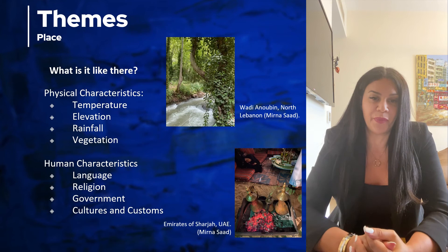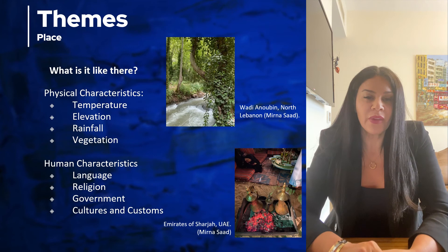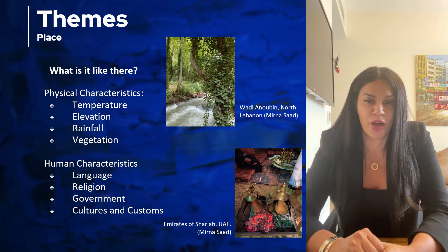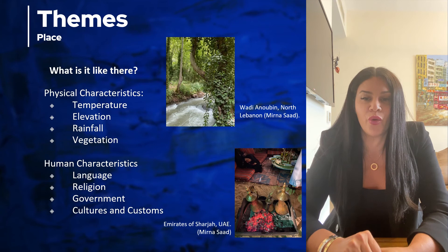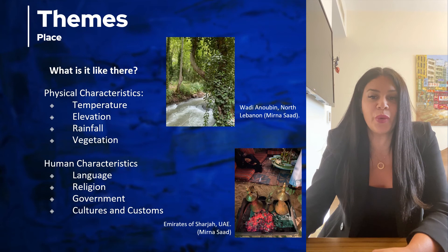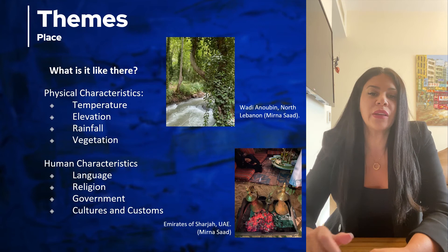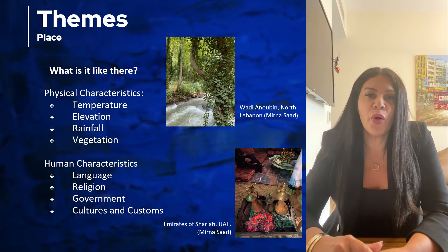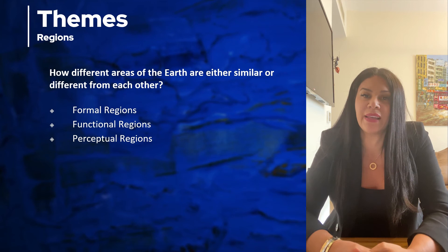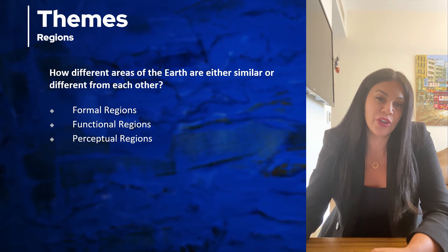The next theme of geography is place. Place answers the question: what is it like there? Geographers look at physical and human characteristics of a place. When we talk about the physical characteristics of a place, we talk about climate, weather, mountains, deserts, and vegetation. And when we talk about the human characteristics of a place, we discuss who lives there, what language they speak, what are their customs, and what type of government they have.